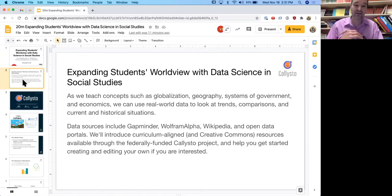Today we're specifically talking about how we can integrate data science into social studies, looking at globalization, geography, government systems, economics, and using actual real world data to look at trends and comparisons. We'll look at some data sources like Gapminder and Wolfram Alpha. Wikipedia is a great source for data. And we'll look at some open data portals and curriculum aligned modules.